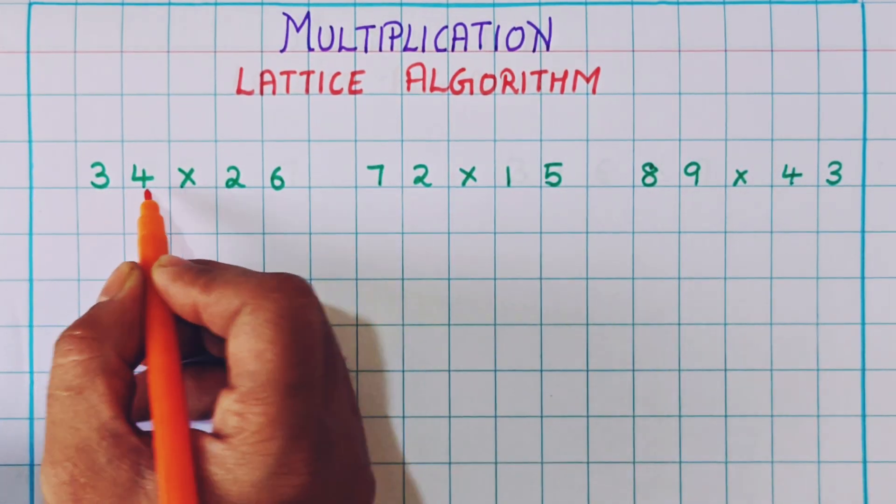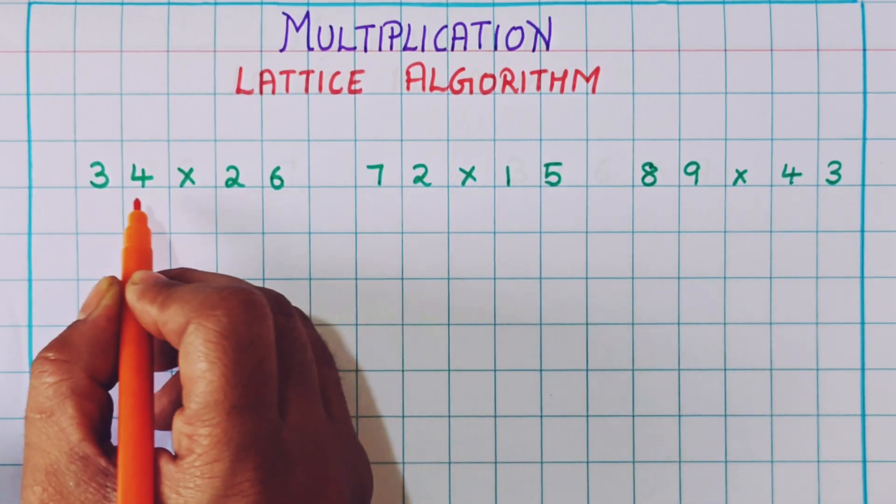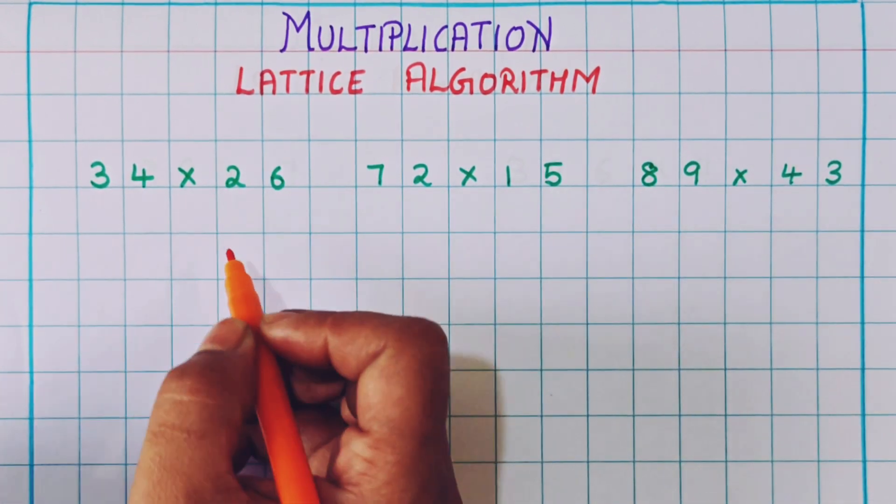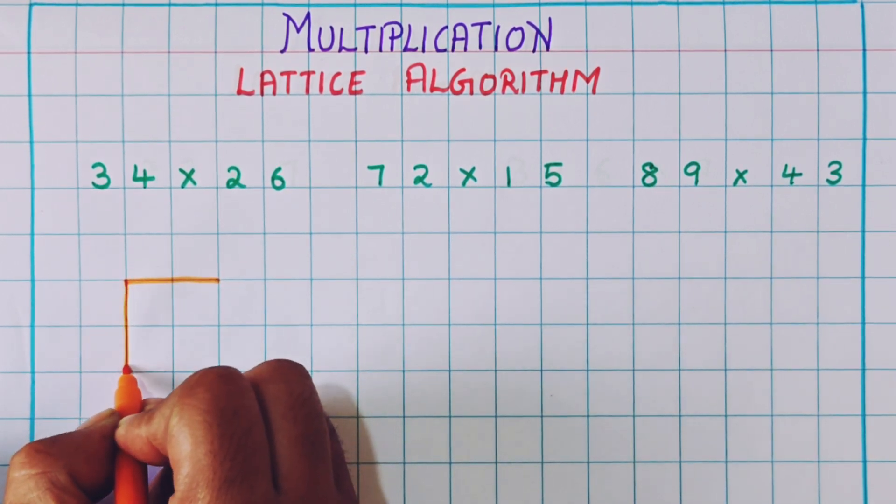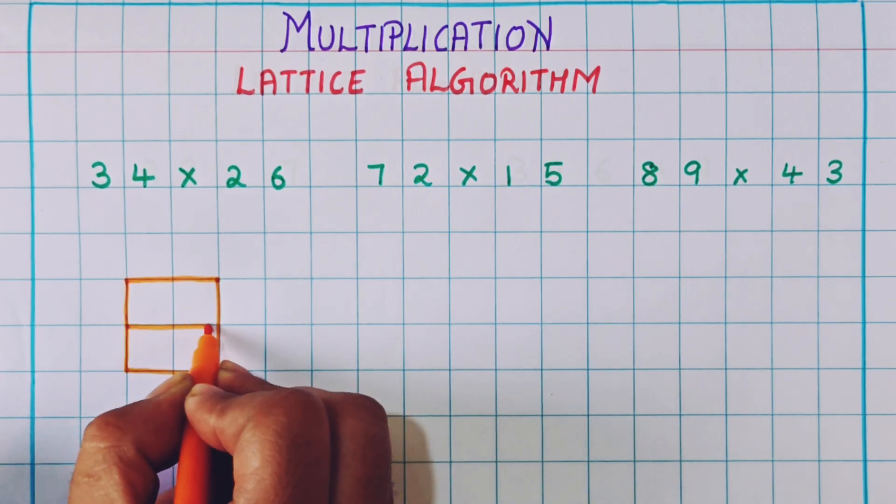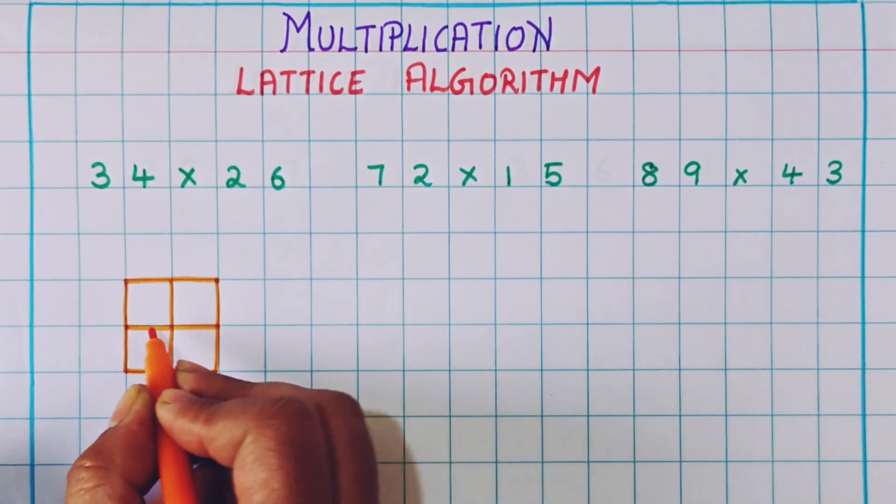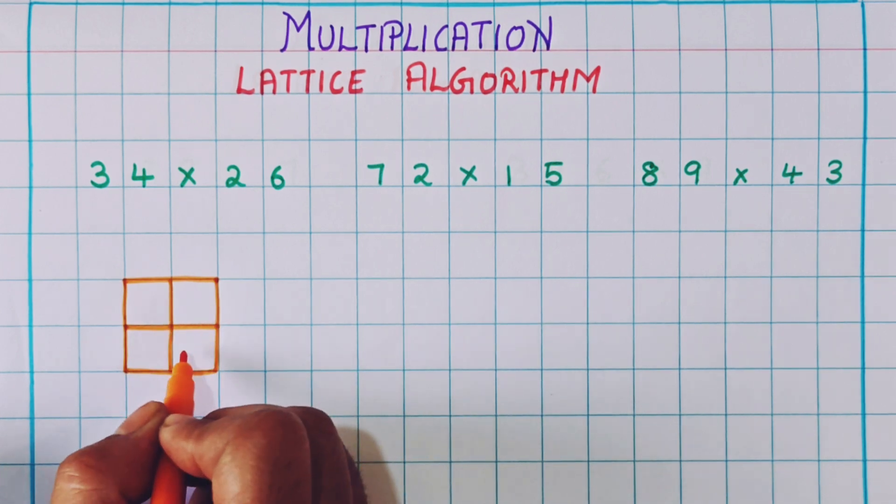Now here we have 34 into 26. So two-digit into two-digit. Two twos are how much? Four. So we are going to make a box having four squares like this, having four divisions like this.